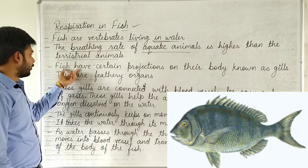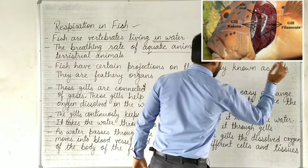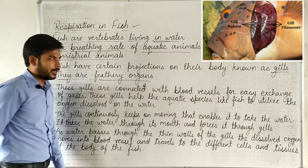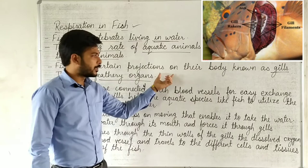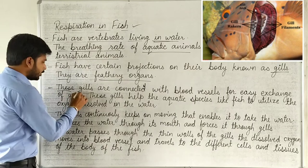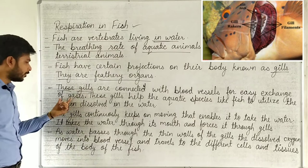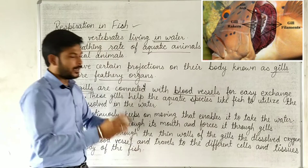Fish have certain projections on their body known as gills. They are feathery organs — feather-like projections on their skin. These gills are connected with blood vessels for easy exchange of gases.